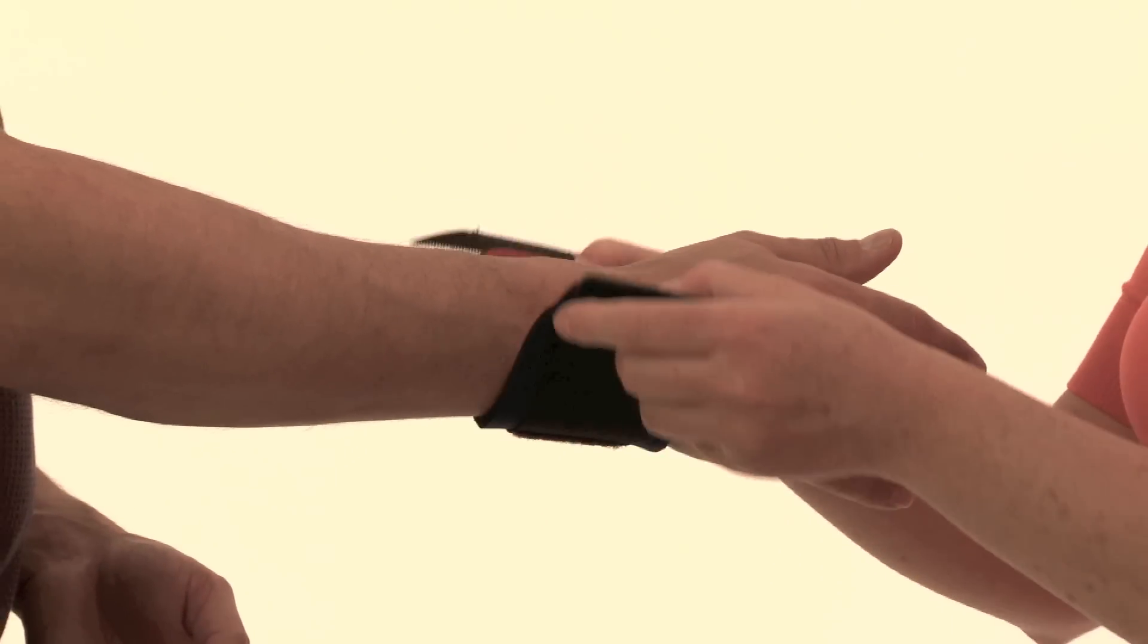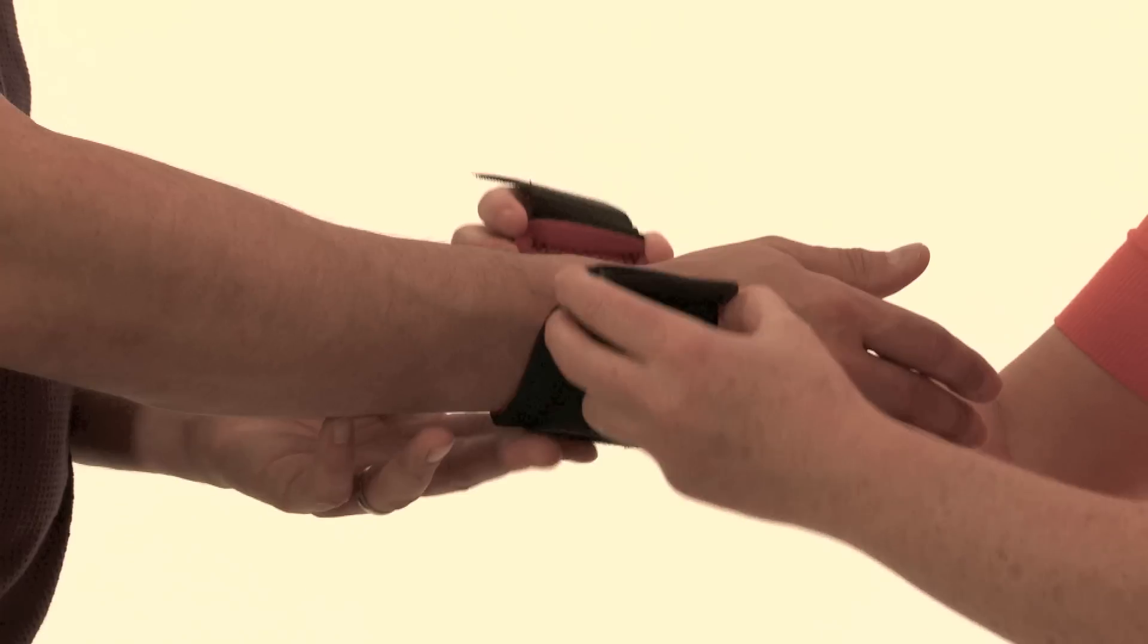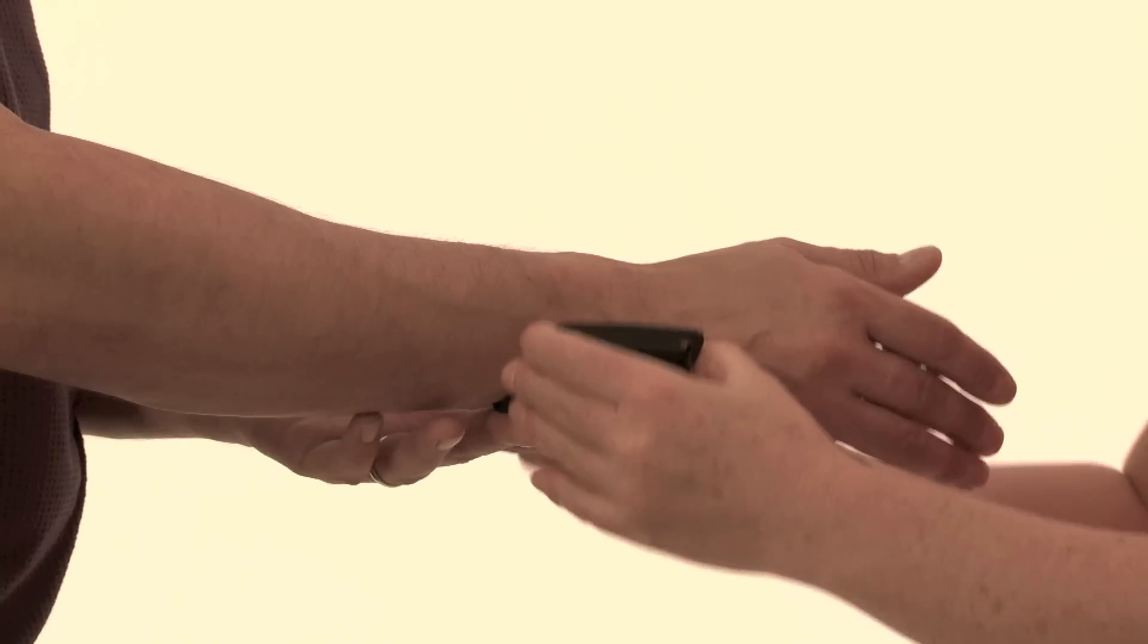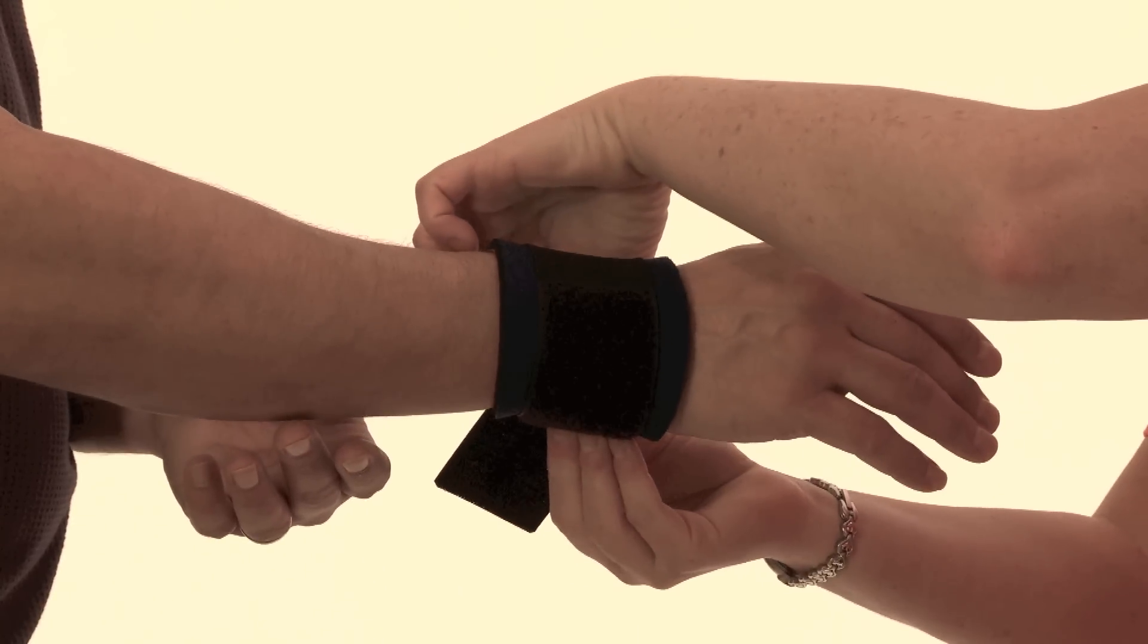To apply, place the support on the wrist with the D-ring buckle on the top or bottom, depending on which is more comfortable for the patient.